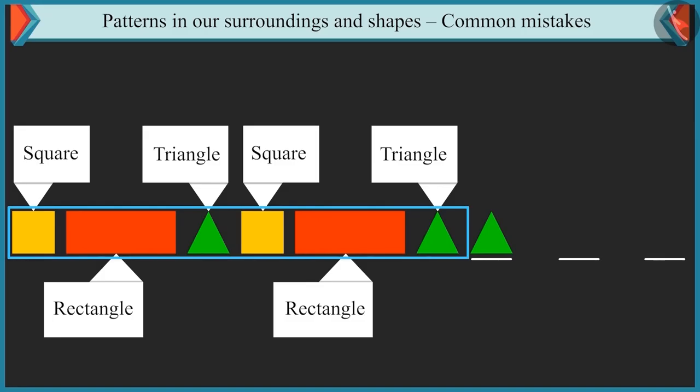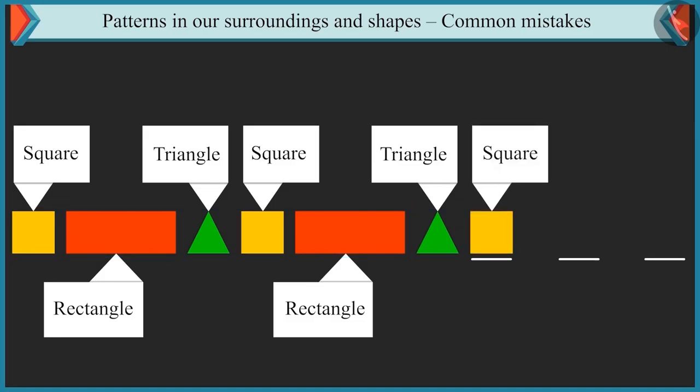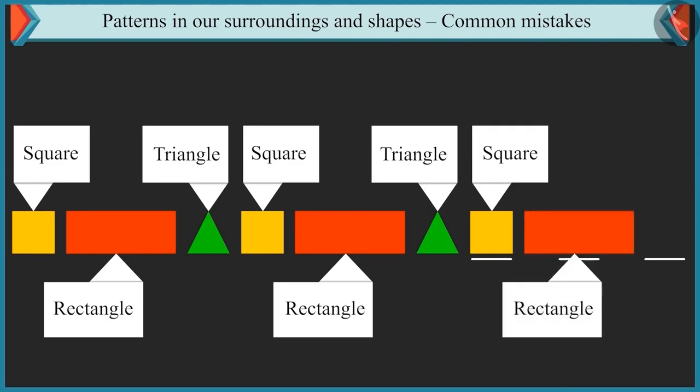If we repeat these shapes in this order, then after triangle, square, after square, rectangle and after rectangle, it is triangle.